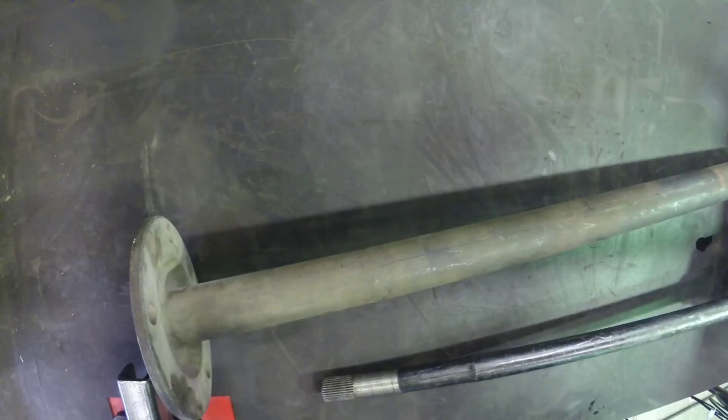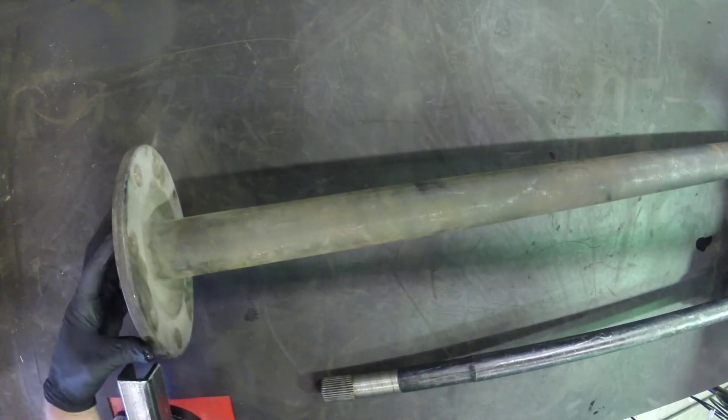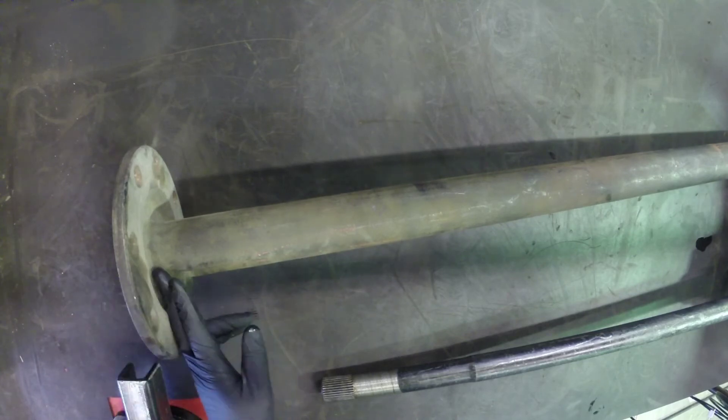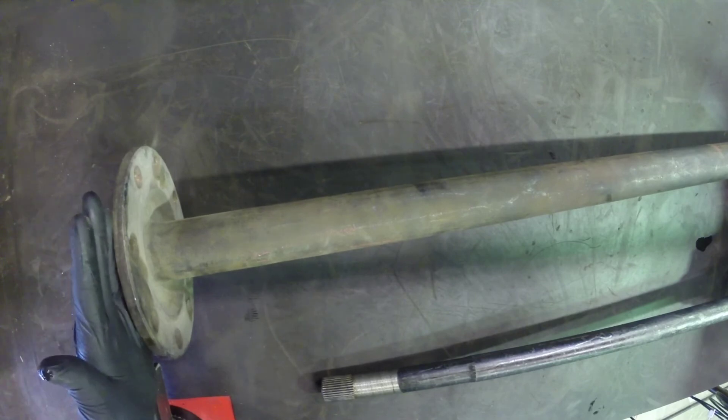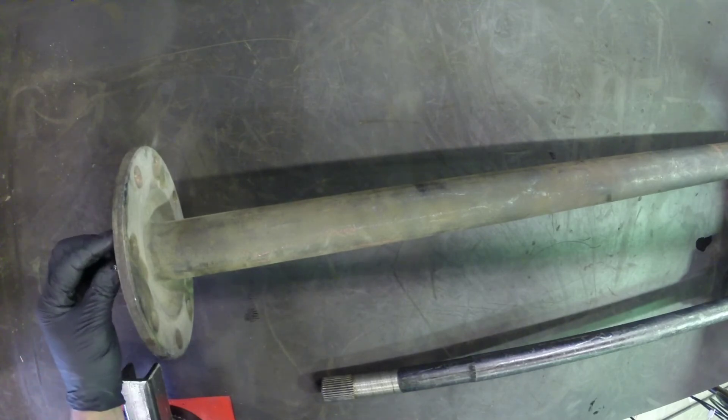And then the other end here actually gets fixed to the hub, but it's not directly supported by a wheel bearing. Instead, this flange mounts to the outer face of the hub and is held there by tapered dowels and studs and nuts.